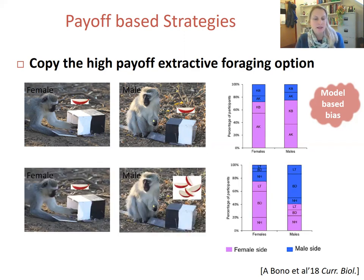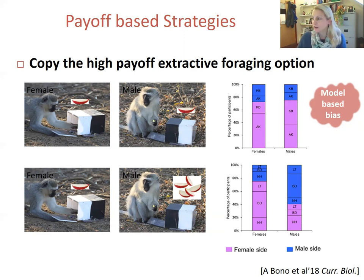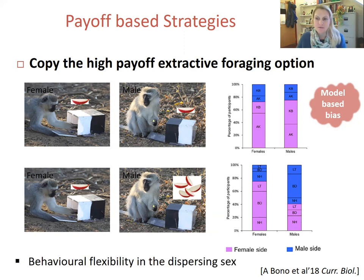When the study is repeated with unequal payoffs — the female opens the white side for one apple piece while the male opens the black side for five apple pieces — you get a different result. Male observers, but not female observers, switched to copying the male. The researchers explain this sex difference as due to the fact that resident females can afford to be more conservative in their foraging preferences, whereas the dispersing sex — the males — may have to be more behaviourally flexible in order to survive.